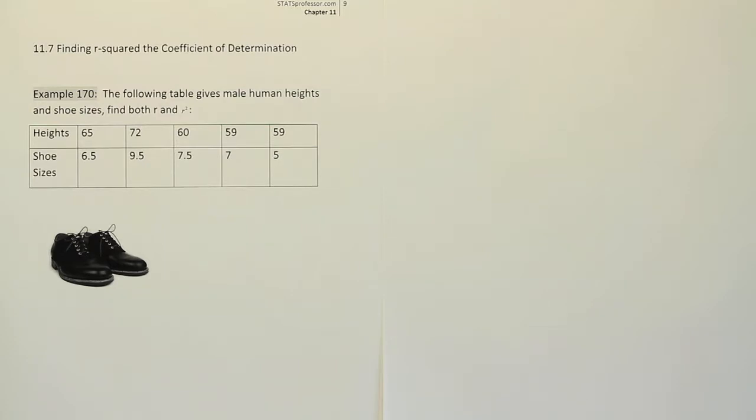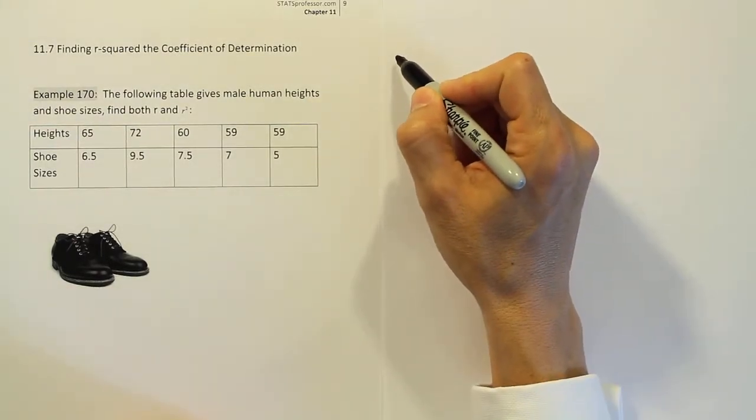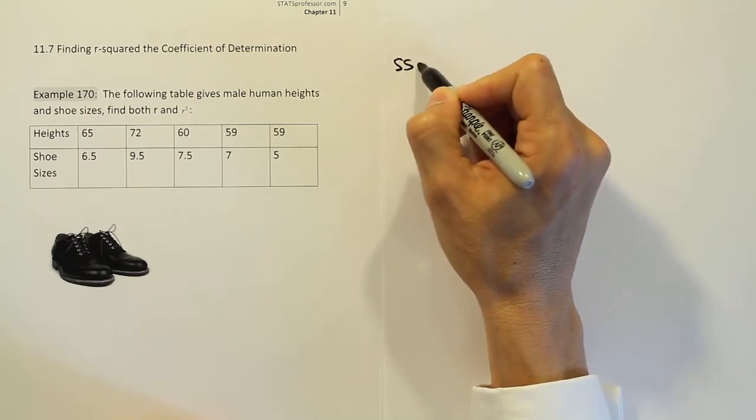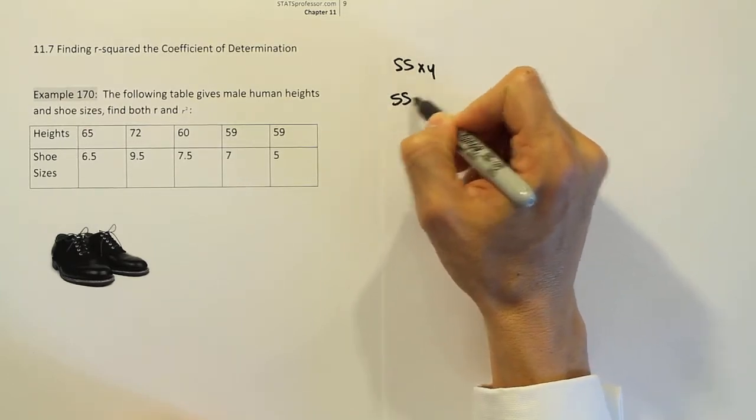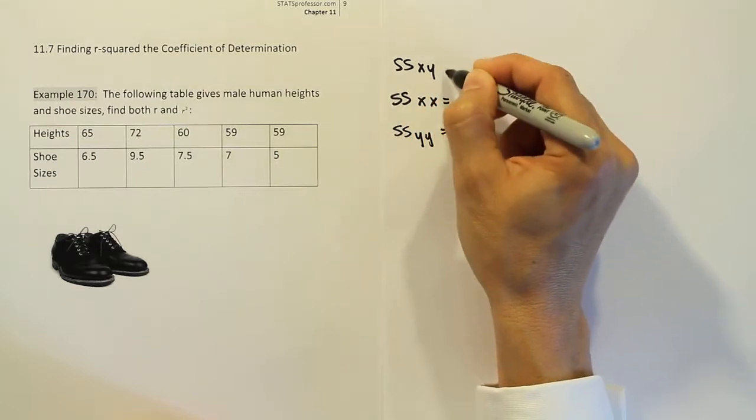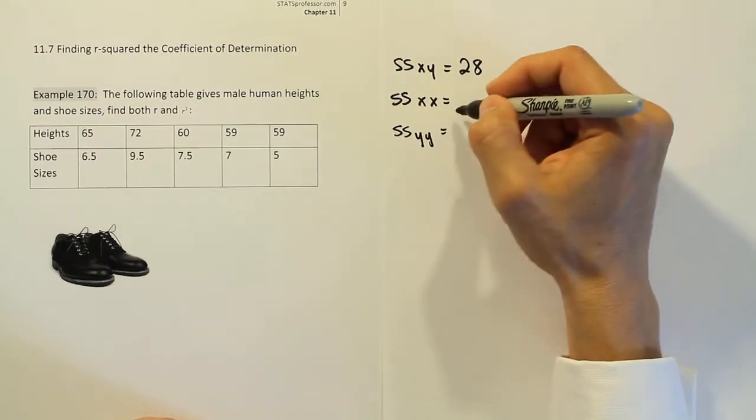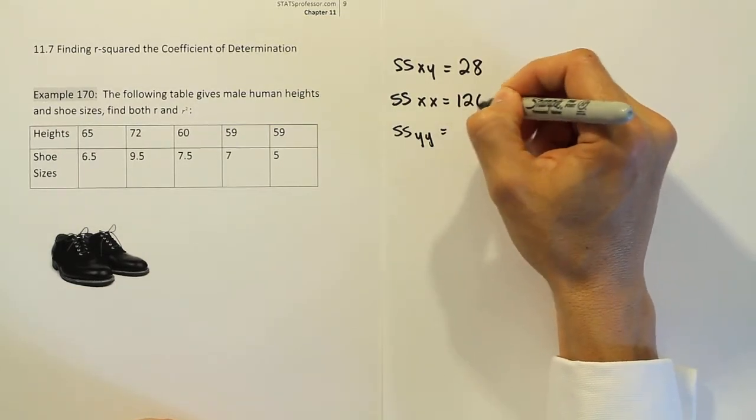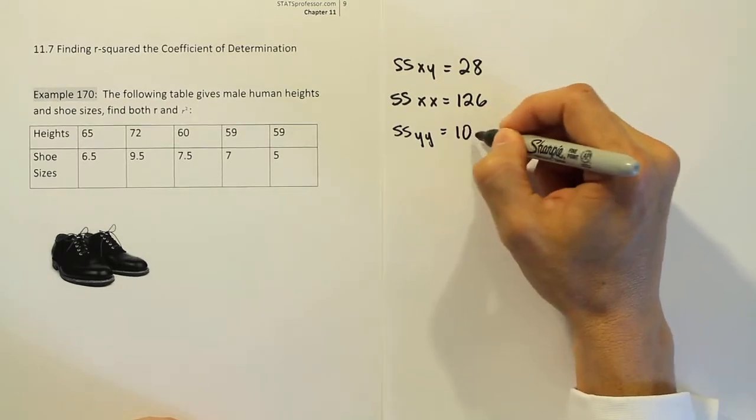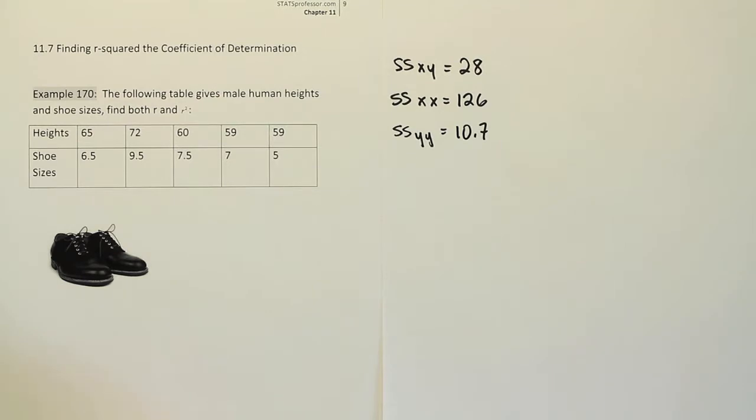What we want to do first when we want to calculate r and r squared is come up with those sum of squared values. We've done that so many times that I've gone ahead and done it for us here. We're going to do ssxy, ssxx, and ssyy. I've already worked that out using our standard formulas. When you work that out, you get the following values. The last one is 10.7. Those three values we're going to use to solve the rest of the problem.